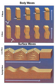Body waves travel through the interior of the Earth, while surface waves travel across the surface. Surface waves decay more slowly with distance than body waves, which travel in three dimensions. Particle motion of surface waves is larger than that of body waves, so surface waves tend to cause more damage.